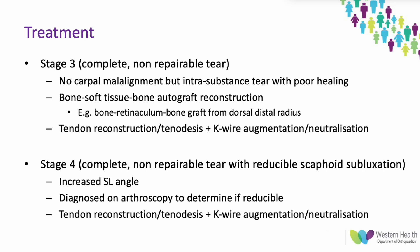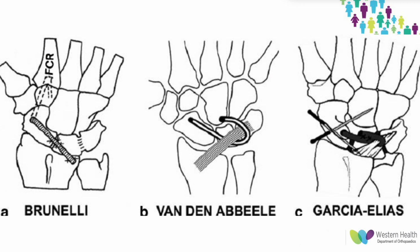The most common tenodesis procedures include: the Brunelli, where an FCR tendon slip is threaded through a tunnel in the distal scaphoid and fixed to the dorsal distal radius; later modified to avoid crossing the radiocarpal joint by attaching the FCR back onto itself or directly to the lunate to reduce range-of-motion loss. The van der Beel modification passes the FCR under the radiotriquetral ligament and tensioned onto itself. The Garcia-Elias tri-ligament tenodesis (3LT) attaches FCR to a trough in the lunate with suture anchors, passes it through the dorsal radiocarpal ligament, and secures it back onto itself — reconstructing the STT, dorsal scapholunate, and dorsal radiotriquetral ligaments, reporting over 70% success at four years post-op.